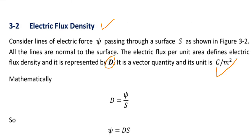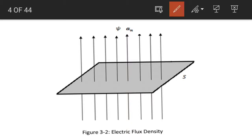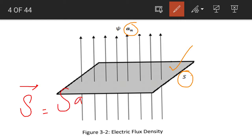Let us consider the diagram on the next page. We consider an open surface, and the area of this open surface is represented by S. We consider a unit vector An, which is normal to this rectangular open surface. The area can be represented as a vector quantity equal to S multiplied by the unit vector An, which is normal to this area.